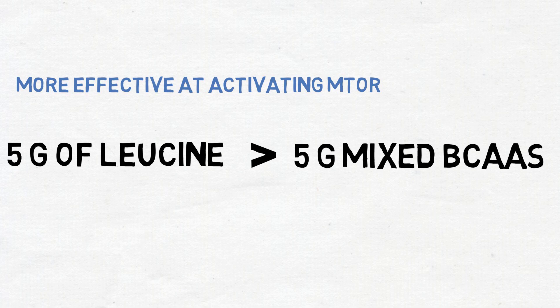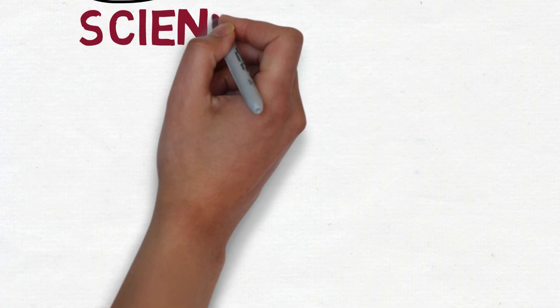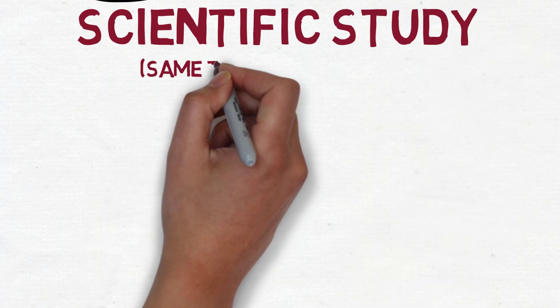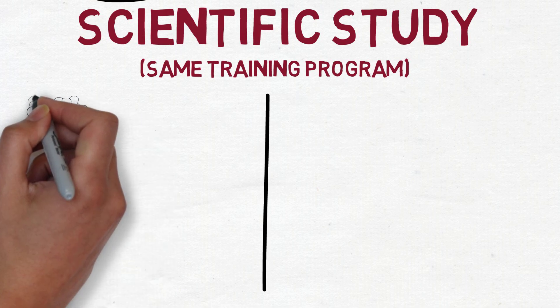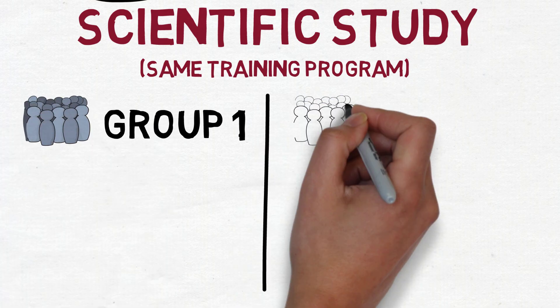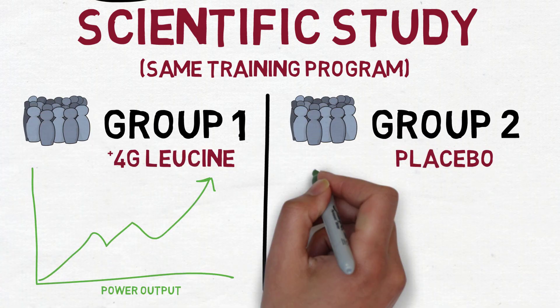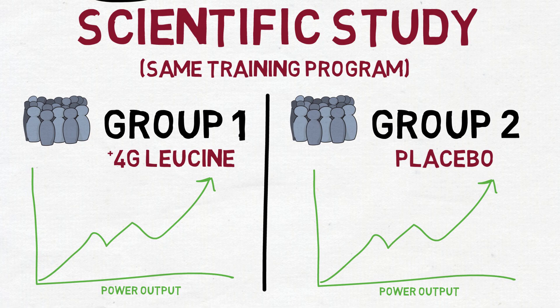In one study, four grams of leucine was given daily to a group of untrained men who were participating in a resistance training protocol. The placebo group received nothing. At the end of the study, the group who was supplementing with leucine saw a 40.8% increase in their strength versus the placebo group who saw just a 31% increase in strength.